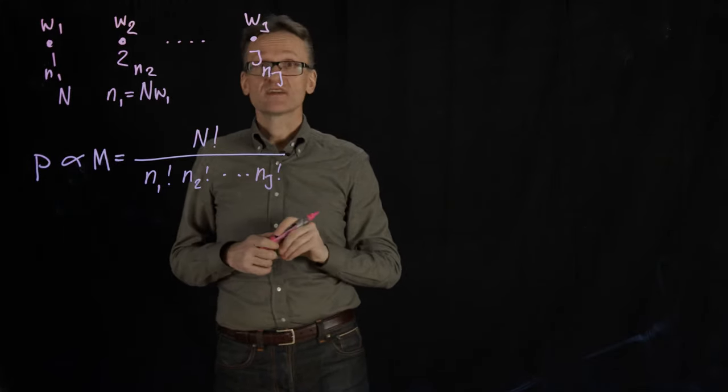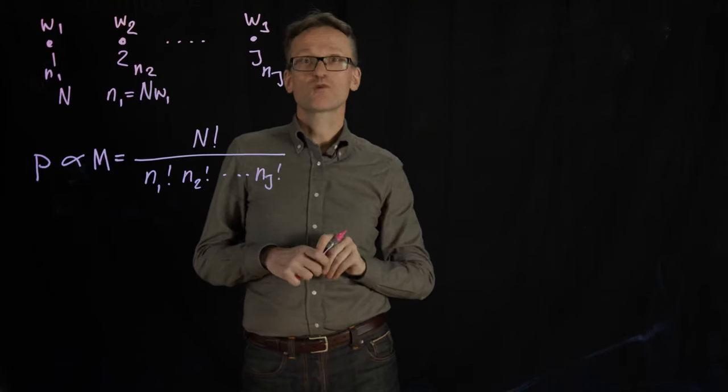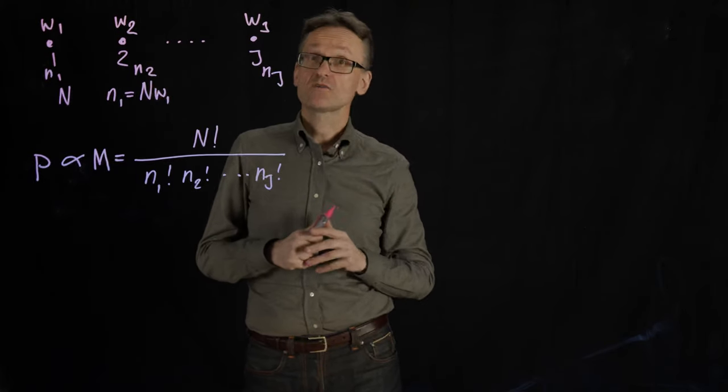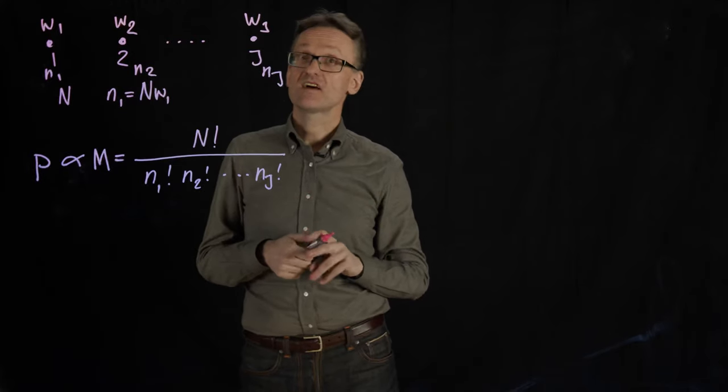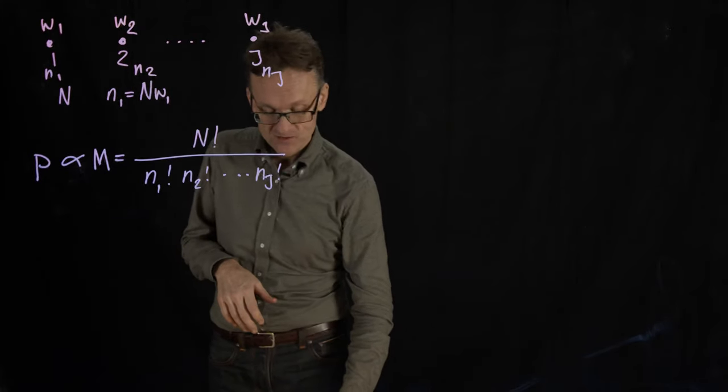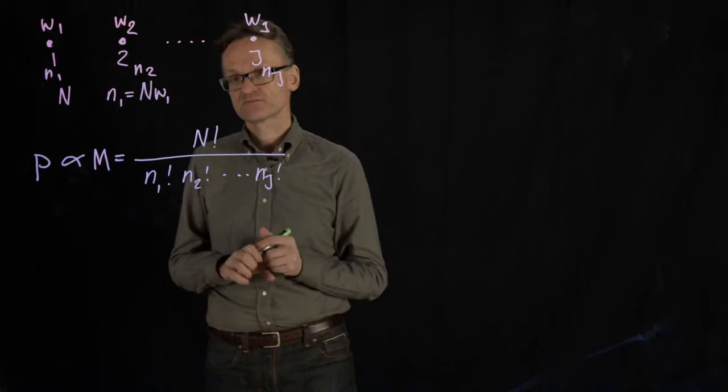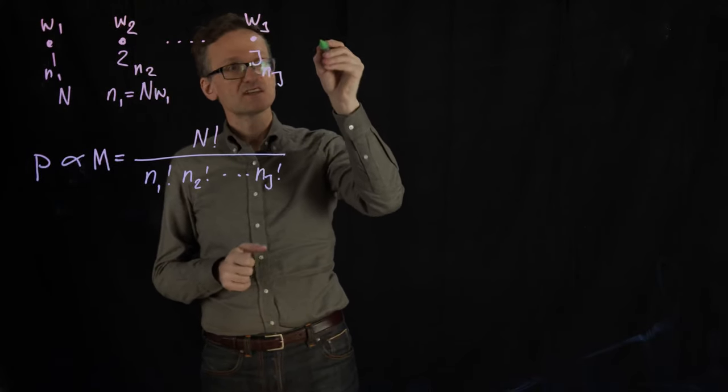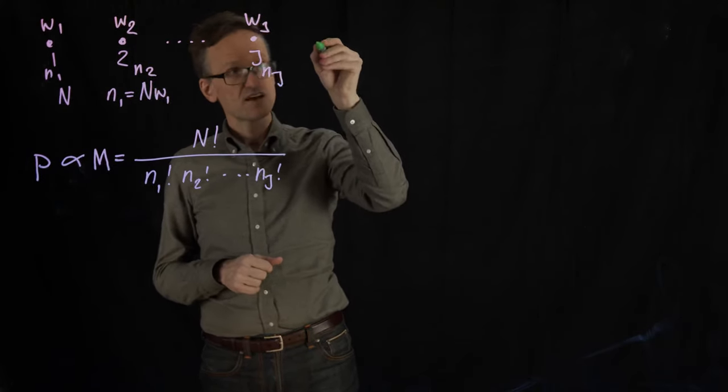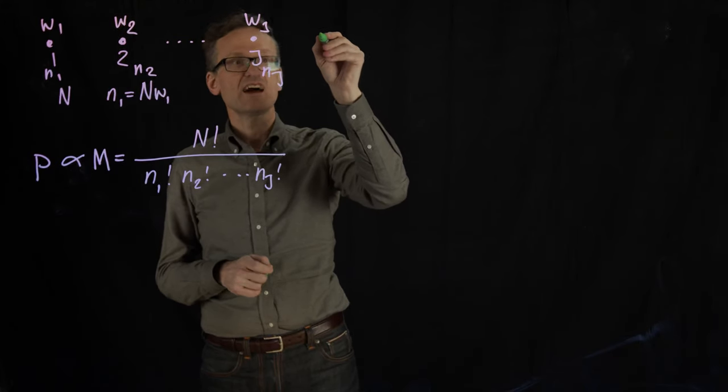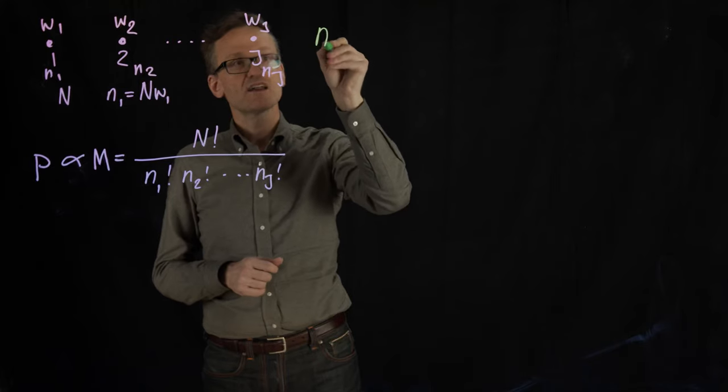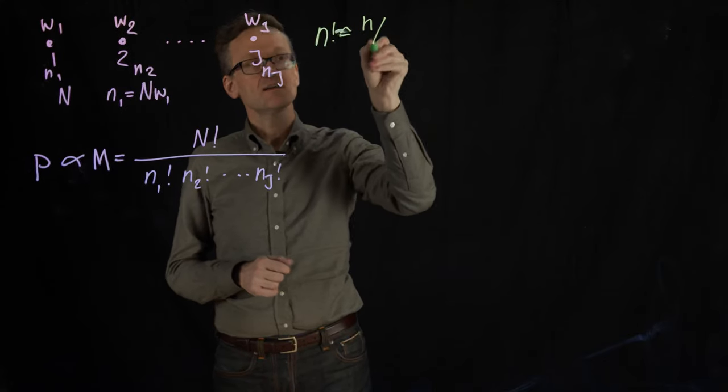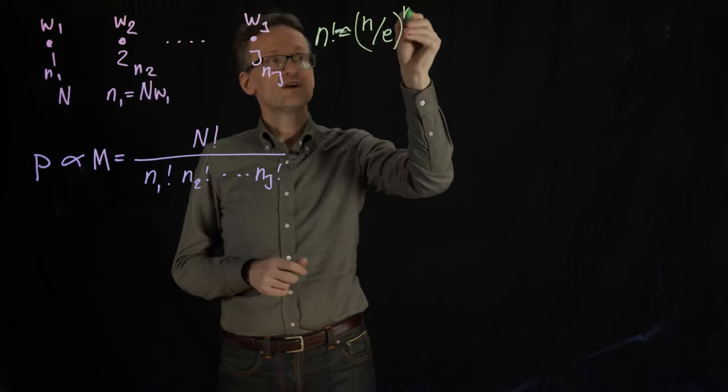The factorial function is a complicated one. It's not easy to work with. And I can't really immediately do anything here. But remember that we're talking about large numbers in general, in statistical mechanics. And for large values of factorial, there is something called the Stirling formula that we can use to approximate it. And to save space, I'll write that up here. Stirling's formula says that for large values of n factorial, we can write that as approximately n divided by the natural logarithm e raised to the power of n.